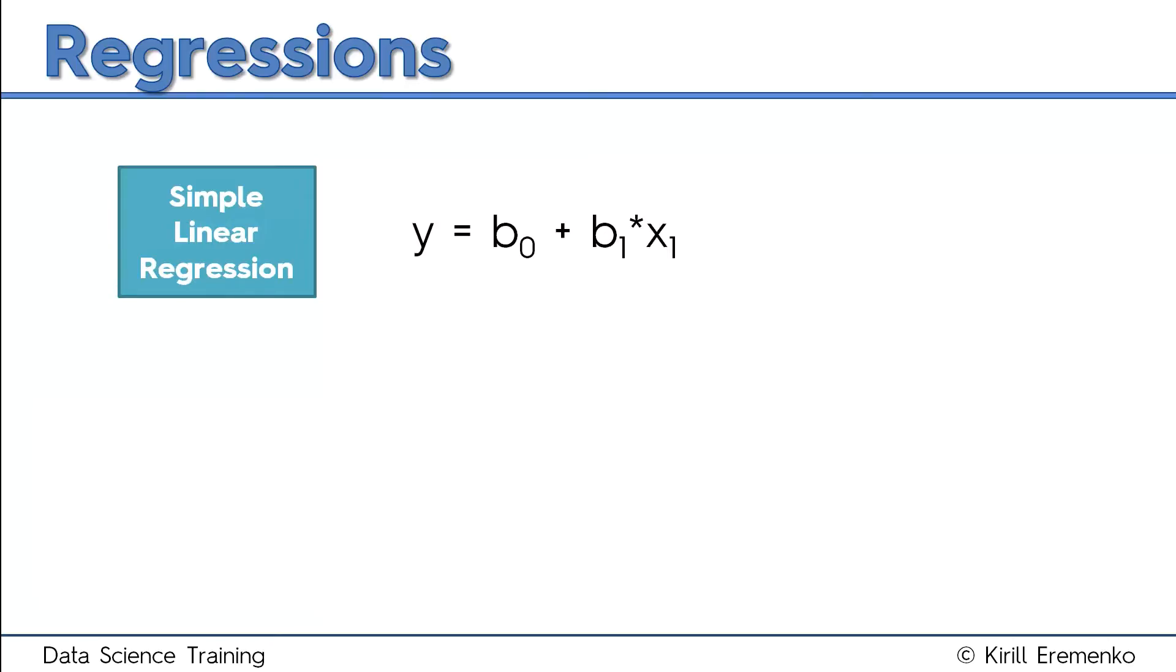A simple linear regression is this formula where y equals b0 plus b1 times x. You might recognize this formula from high school—it's just a formula of a trend line or sloped line on an x-y axis. Let's go through these variables and coefficients one by one.